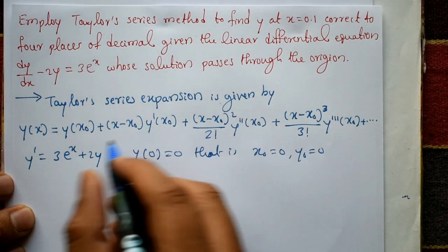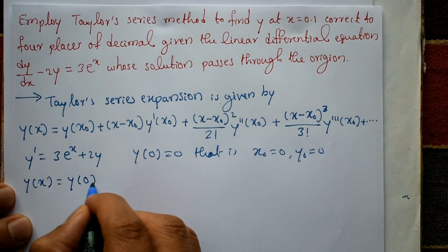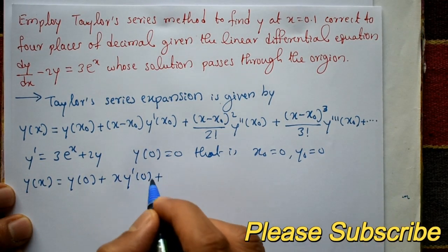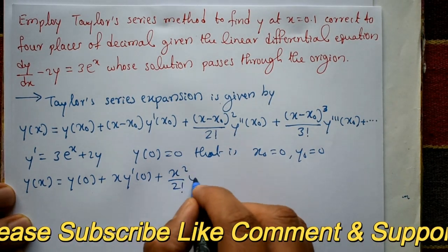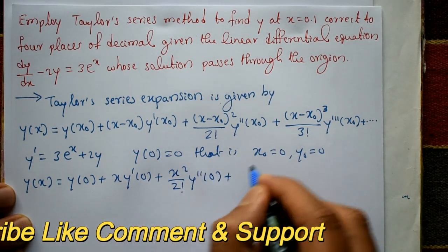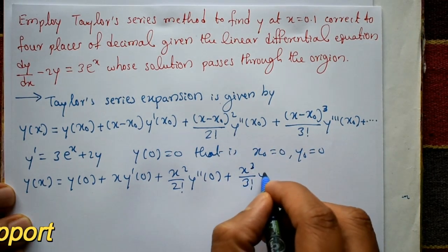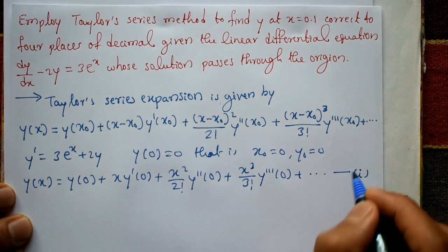Using x₀ in this equation, y(x) = y(0) + x·y'(0) + (x²/2!)·y''(0) + (x³/3!)·y'''(0) + so on. Call this equation number 1.